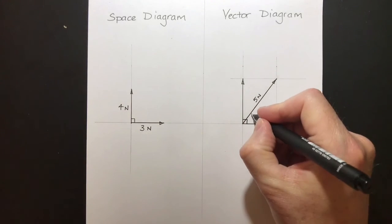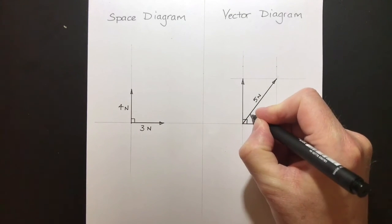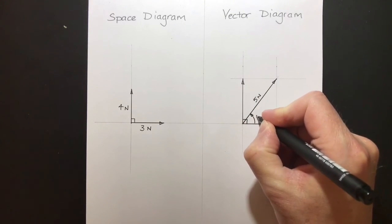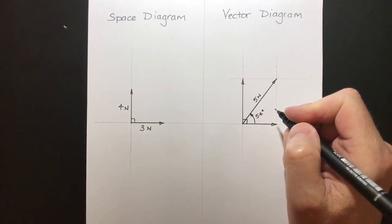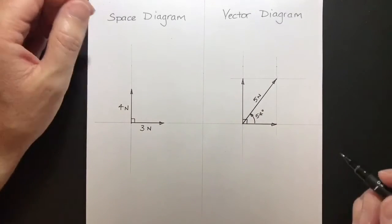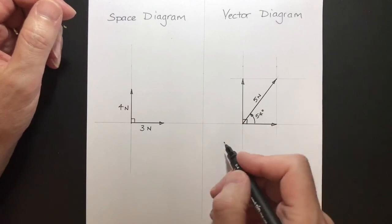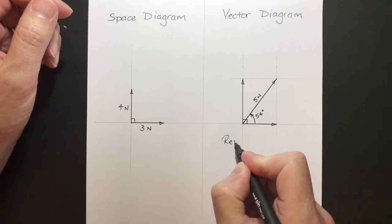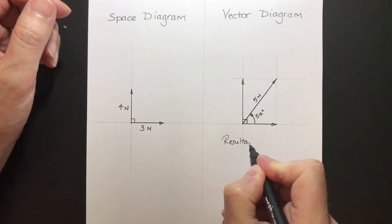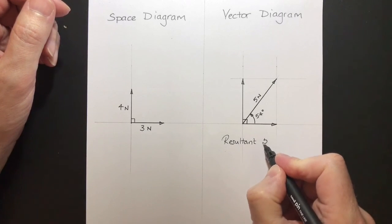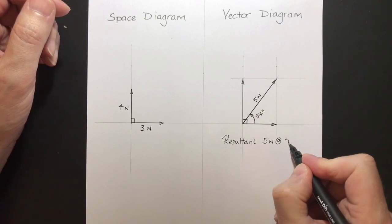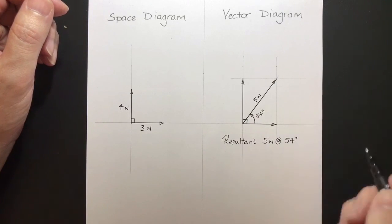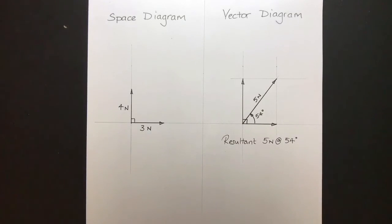I'm going to put that in here. Label that at 54 degrees. So there we have it. There's our resultant. Our resultant is 5 Newtons at 54 degrees. And that's it.